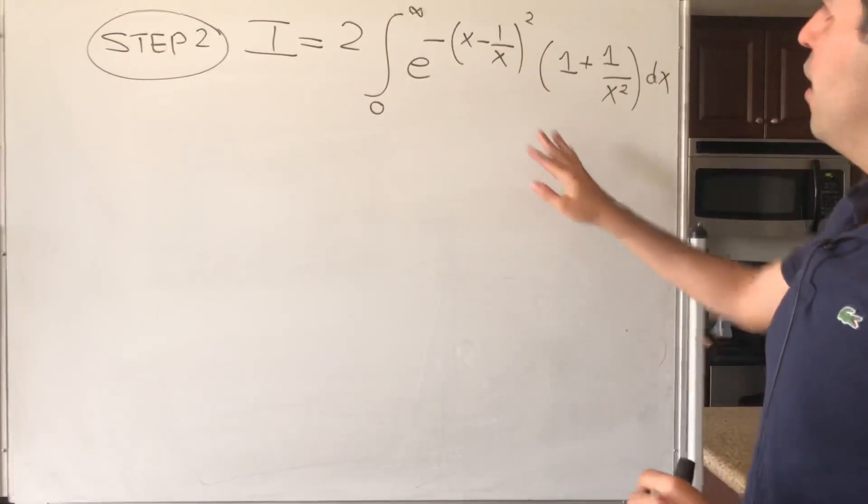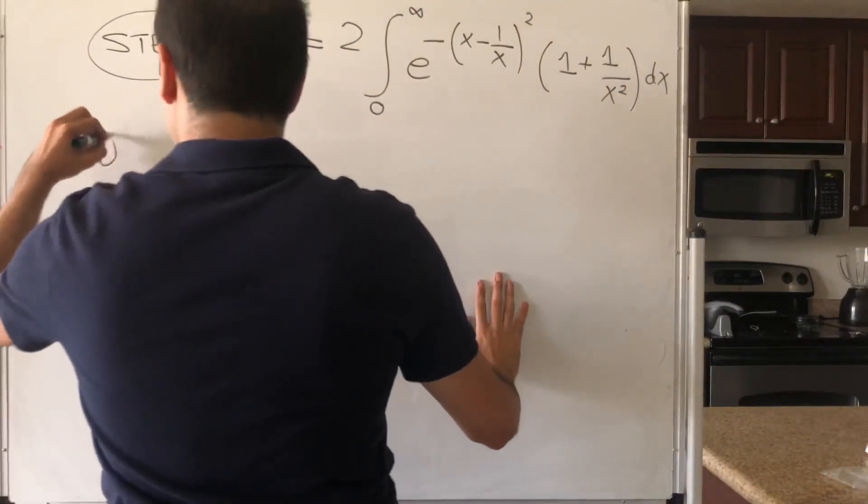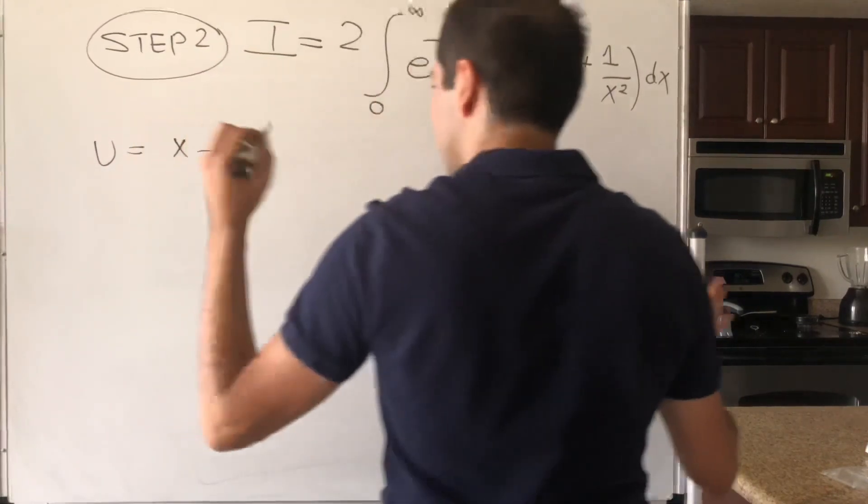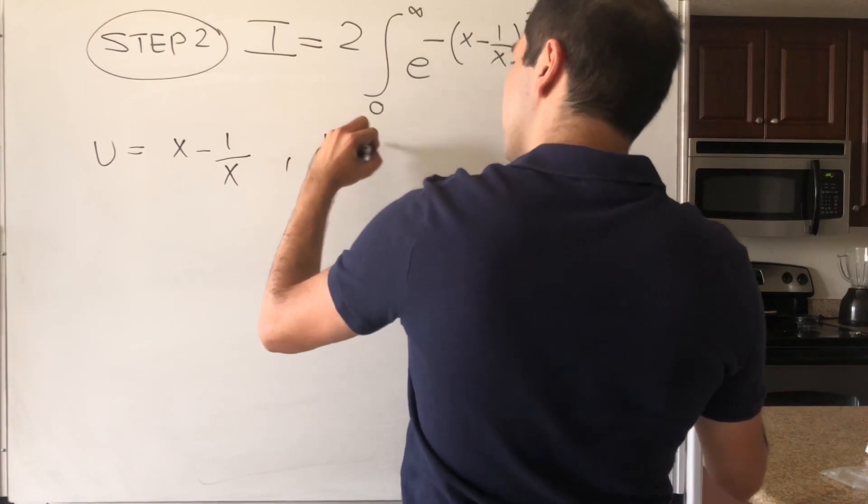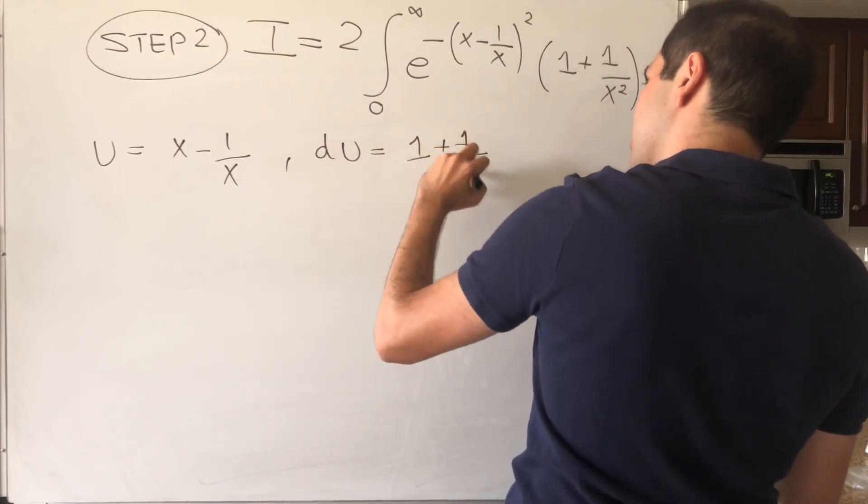And well, let's now just apply the same u substitution. So let u be x minus 1 over x, then du, the nice thing is it's the same thing, 1 plus 1 over x squared dx.